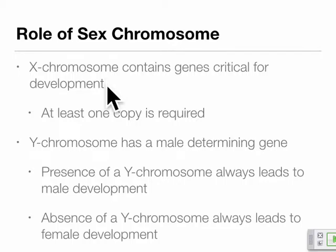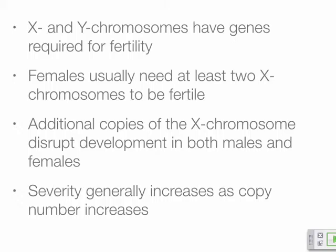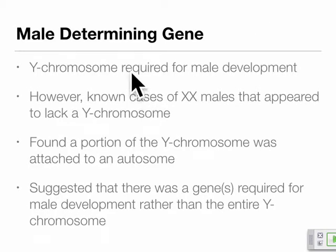Poly-X females, most commonly XXX syndrome with three X chromosomes, are also viable. Because all but one X chromosome becomes inactivated, this is a tolerable situation — you might have three X chromosomes but only one is functional. Females need at least two X chromosomes to be fertile, so XO individuals are also usually sterile. The Y chromosome has a male-determining gene, and its presence always leads to male development; its absence, assuming SRY is functional, always leads to female development.